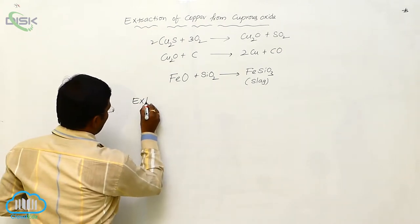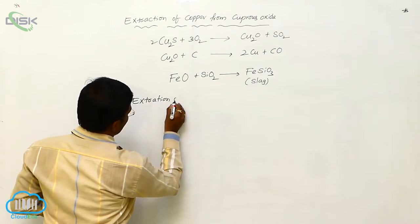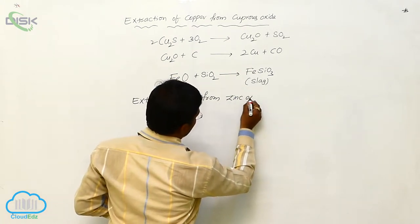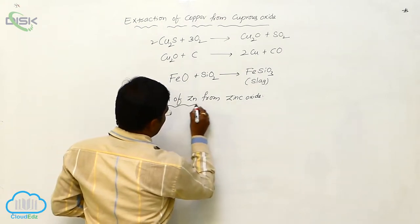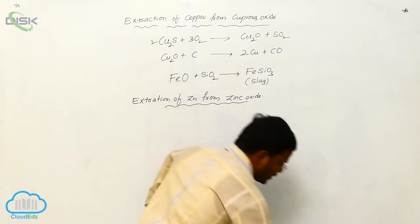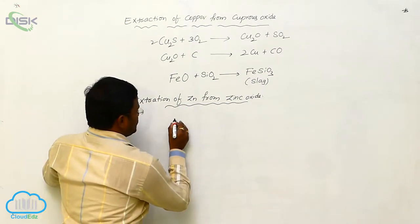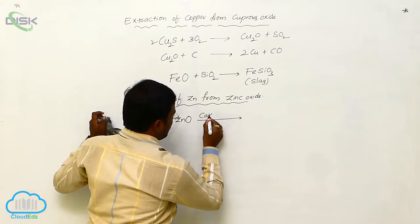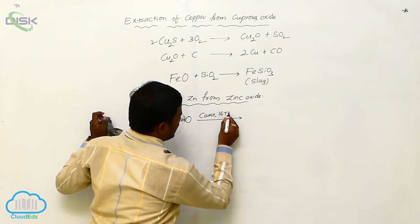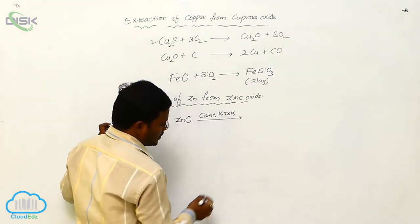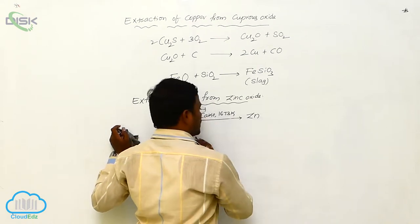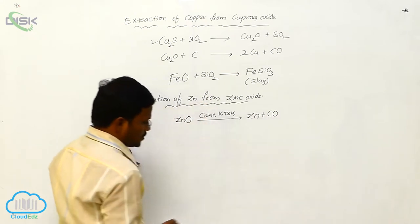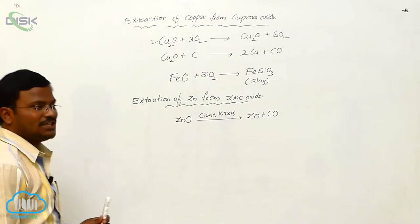Extraction of zinc from zinc oxide. Zinc oxide, that means the oxide ores of zinc, when heated in the presence of coke at nearly 1673 Kelvin, undergoes reduction and converts into zinc plus carbon monoxide. This is the extraction of zinc from zinc oxide.